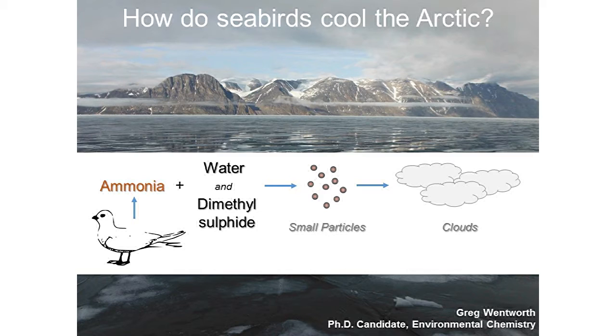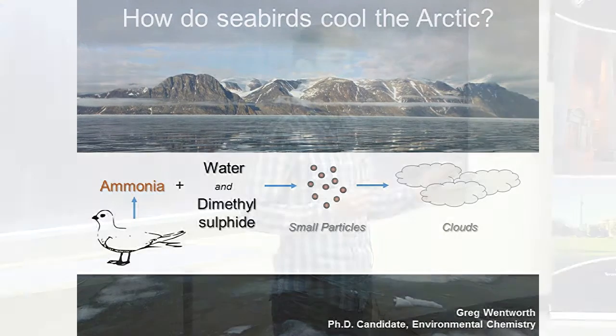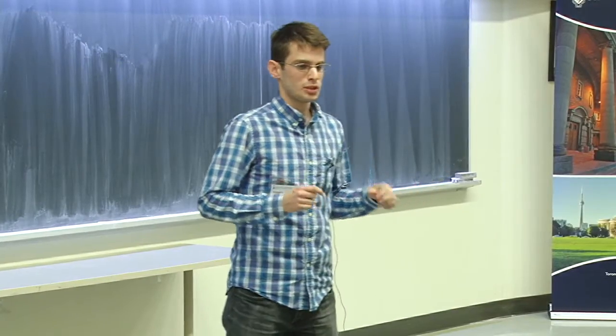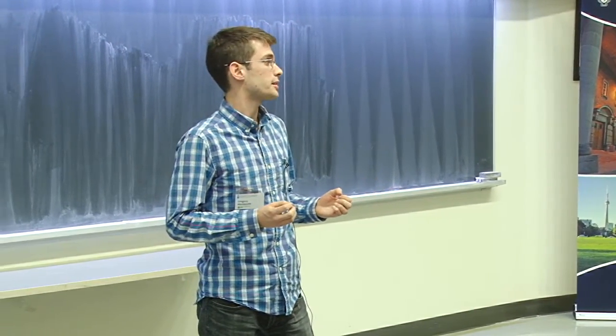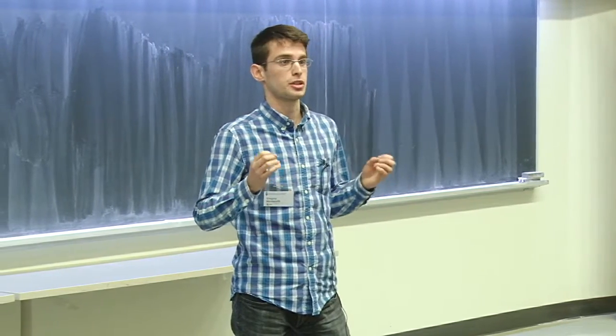Ammonia is important because it degrades air quality and affects climate. Furthermore, excessive ammonia deposition will acidify soil and reduce biodiversity. So the first step in understanding and ultimately mitigating any of these negative effects is to measure how much ammonia is actually present.